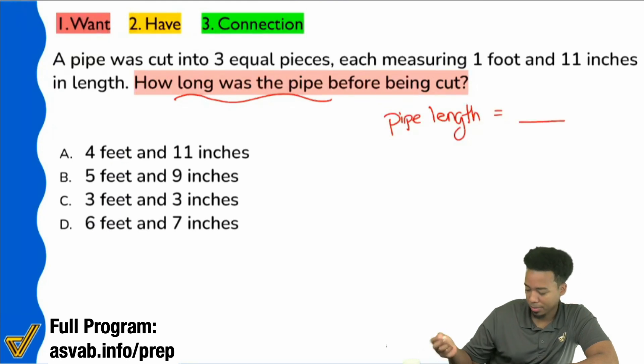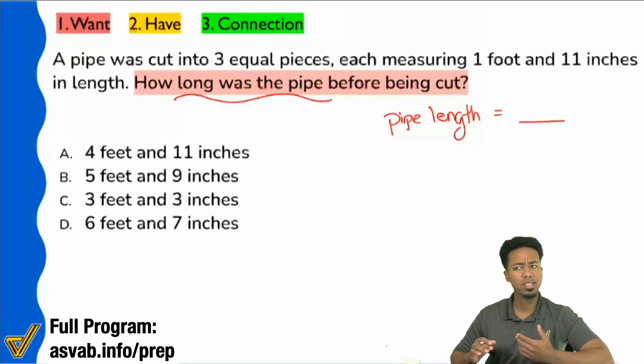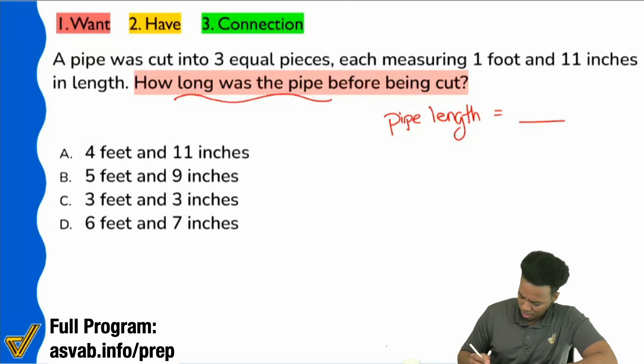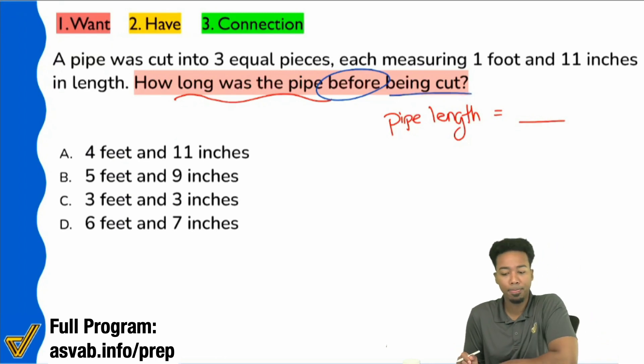But here's the other piece of information you really want to pay attention to: it says 'before being cut.' Can we all agree that if we're talking about how long, how tall, how wide, how whatever, but when they say 'before' something happened, is it safe to say that we might have to work backwards here? We're trying to go back to the beginning, is that fair?